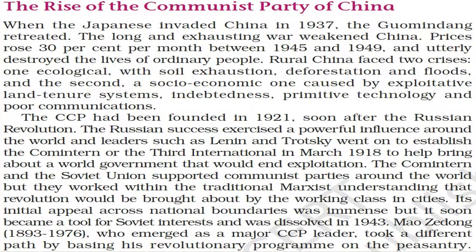Rise of Communist Party of China. When the Japanese invaded China in 1937, the Kuomintang retreated. The long and exhausting war weakened China — prices rose 30% per month between 1945 to 1949 and utterly destroyed the lives of ordinary people. Rural China faced two crises: one ecological, with soil exhaustion, deforestation and floods; and second, a socio-economic one caused by an exploitative land tenure system, indebtedness, primitive technology and poor communication.